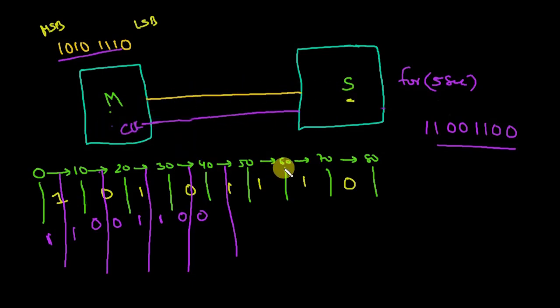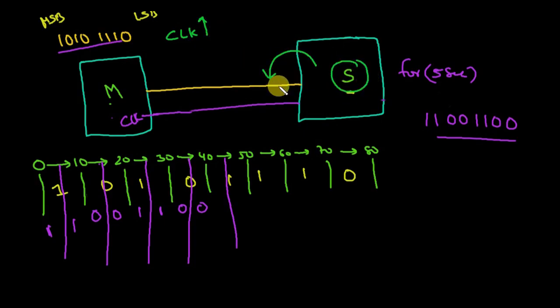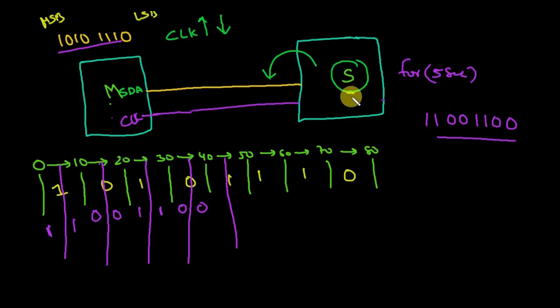With a shared clock, both devices have an understanding. Now let's see how the data transfers using a waveform. The protocol is: whenever the clock is high, the slave will read what data is on the SDA line. Whenever the clock is low, the slave does nothing — it sits silent — while the master changes the data on the SDA line.